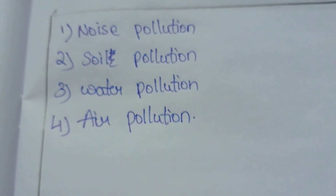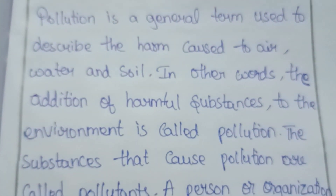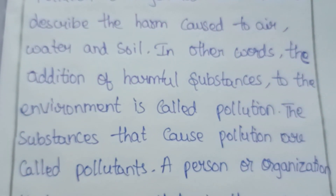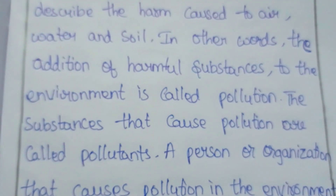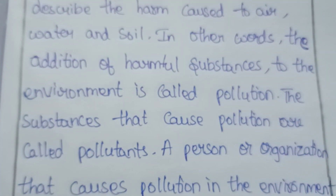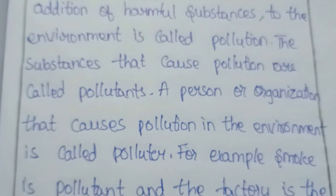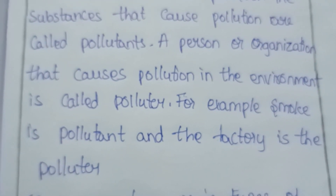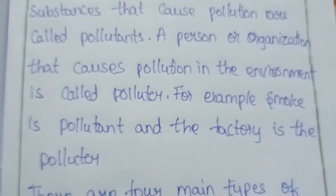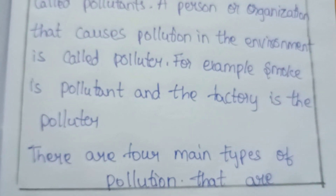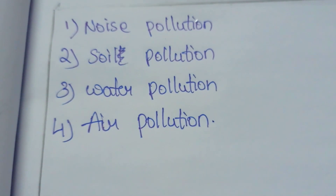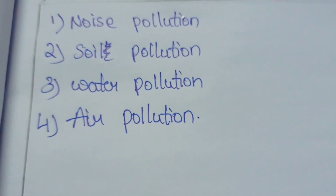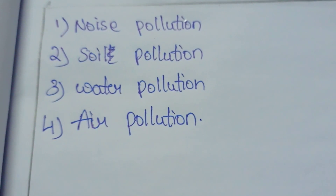Pollution is a general term used to describe the harm caused to air, water, and soil. The addition of harmful substances to the environment is called pollution. Substances that cause pollution are called pollutants, and a person or organization that causes pollution is called a polluter. The four main types are noise pollution, soil pollution, water pollution, and air pollution. Thank you — please like, share, and subscribe to my channel Easy Max, and click the bell icon.